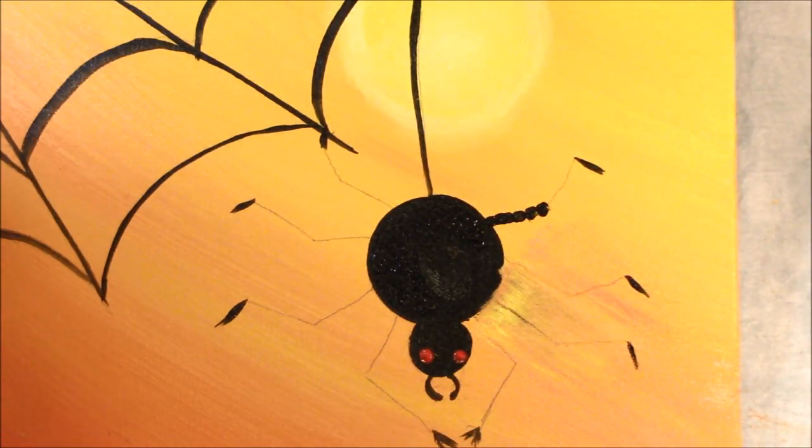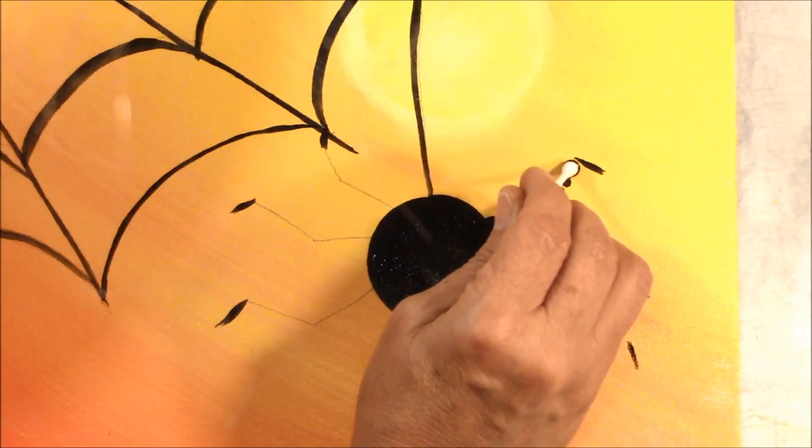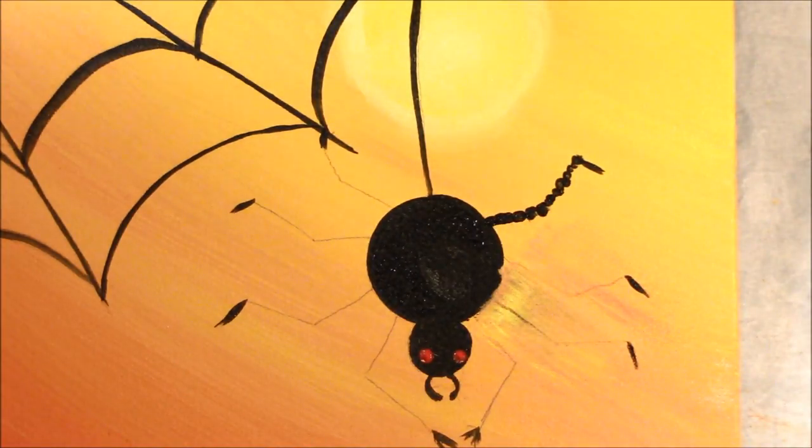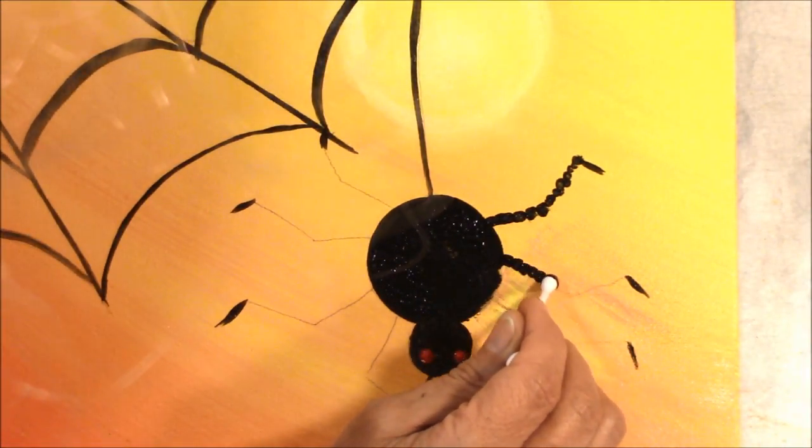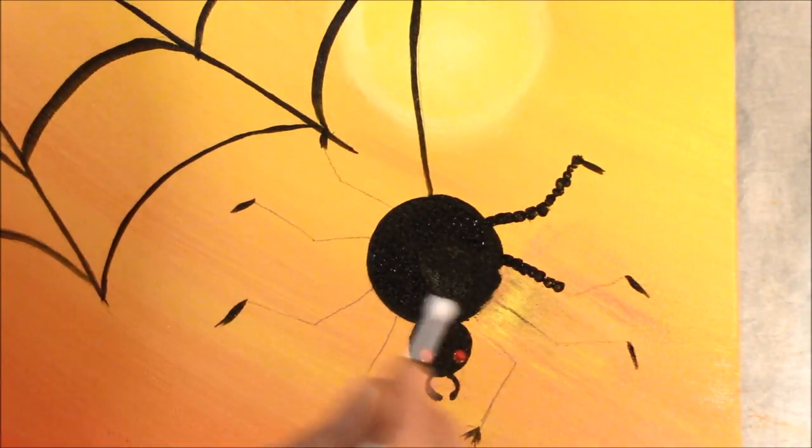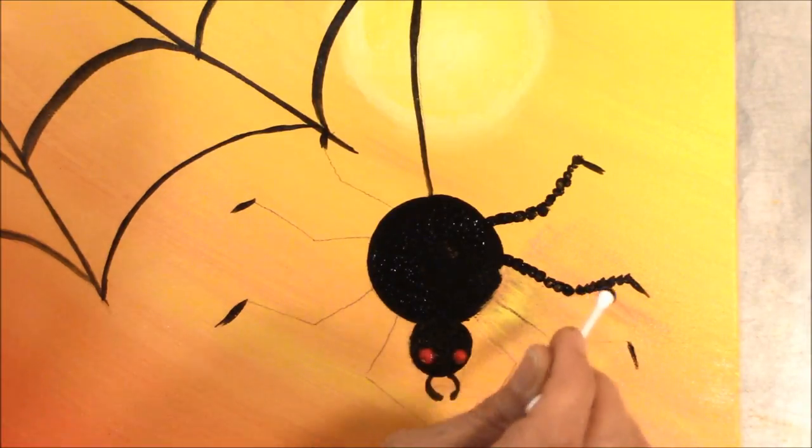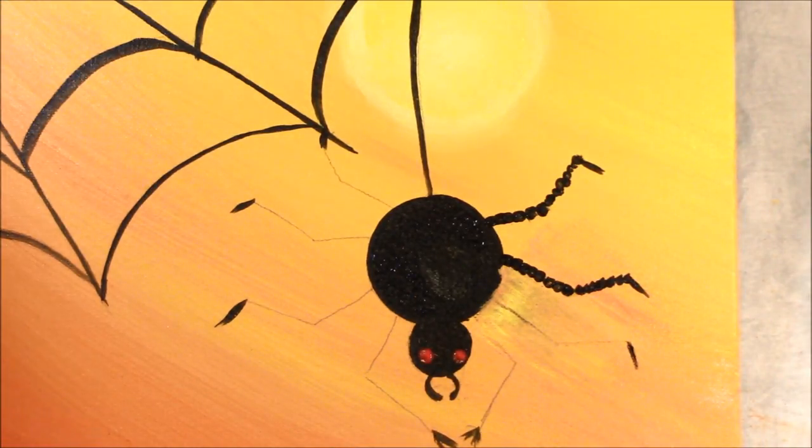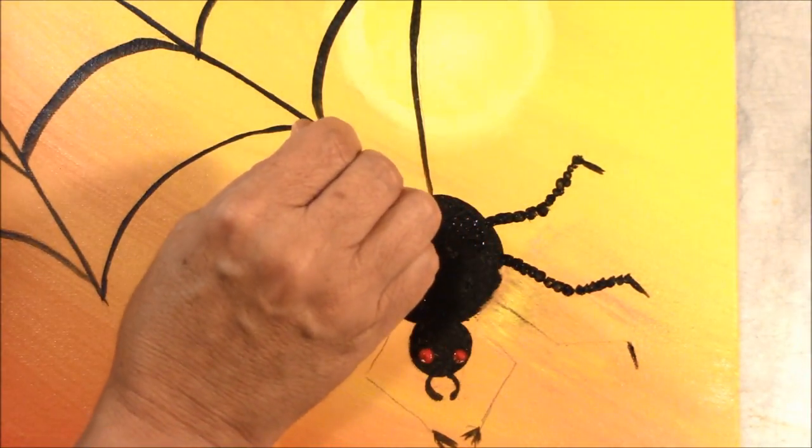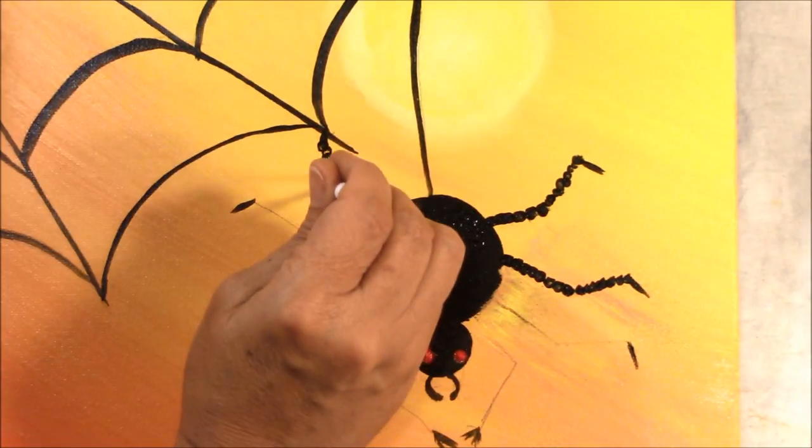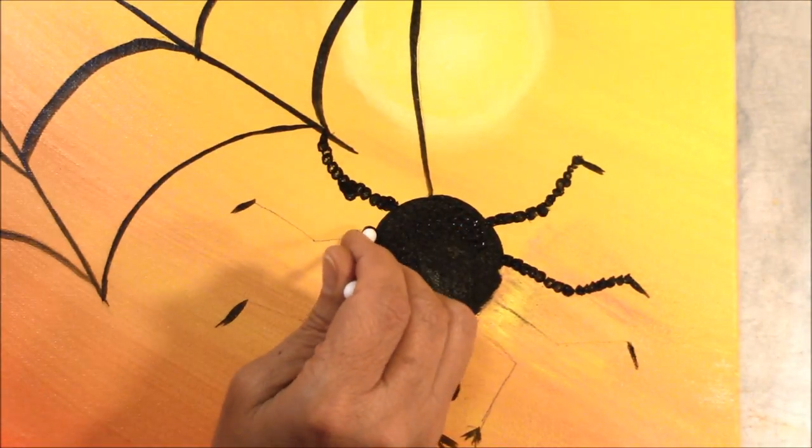When I need more paint, come back and get some more. And then dab down to the foot. And the lighter you dab, the smaller your little spot. So you can control how thick you want each part of the leg. Go a little lighter down to the foot. And that gives the hairy leg effect.